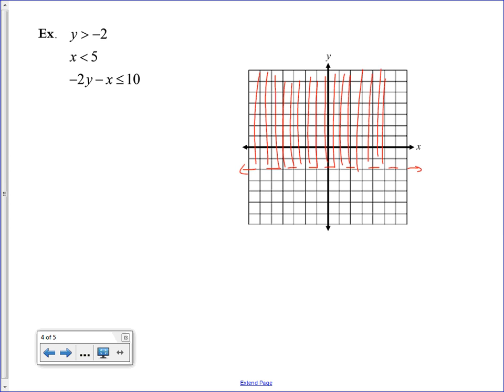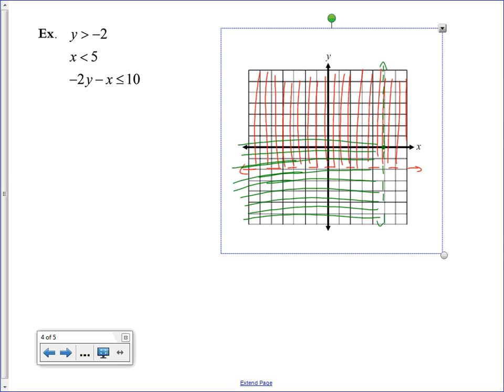The x line is our vertical line, and that's located at 5. So we're going to find 5 here on the x-axis. 1, 2, 3, 4, 5. We're going to go up and down from there with a big dotted line, because it also does not say equal to. And it says less than 5. So the x values that we want to shade are all of the x values less than 5.